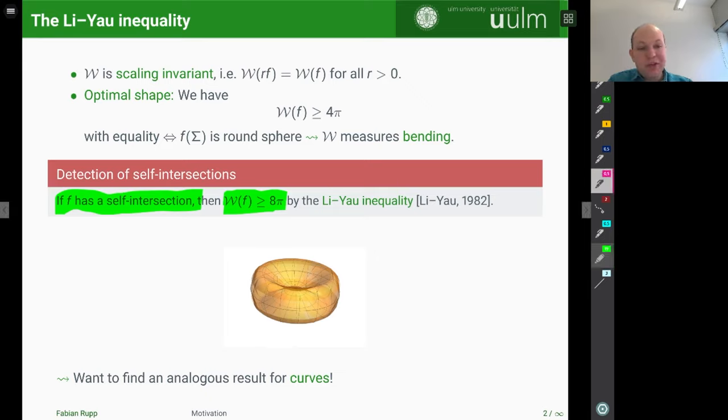And here I have a picture of such an immersion with the self-intersection. So you can see, because it's transparent here, from the bottom and from the top, these two parts they intersect at precisely one point, which is roughly here. And this means that this shape actually has to have at least 8π as its Willmore energy. And what I want to discuss now is whether analogous results for curves are true and to what extent.